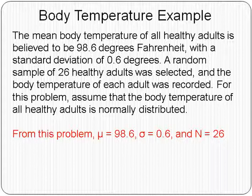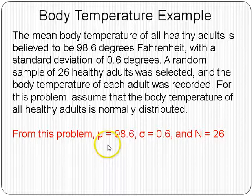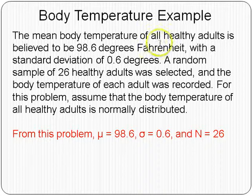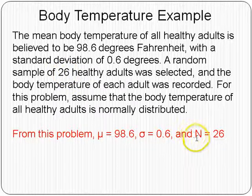All of these problems deal with the same example. The mean body temperature of all healthy adults is believed to be 98.6 degrees, and the standard deviation is about 0.6 degrees. A random sample of 26 healthy adults is selected, and for this problem, assume that body temperature of all healthy adults is normally distributed. Key information: mu is 98.6, sigma is 0.6, and sample size n is 26.